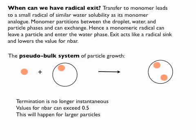Radical exit means a radical can leave a particle. It can undergo termination in the water phase, or it can re-enter a particle. But typically if it leaves a particle it reacts with water-soluble radicals, so you drop the average number of radicals within a particle.